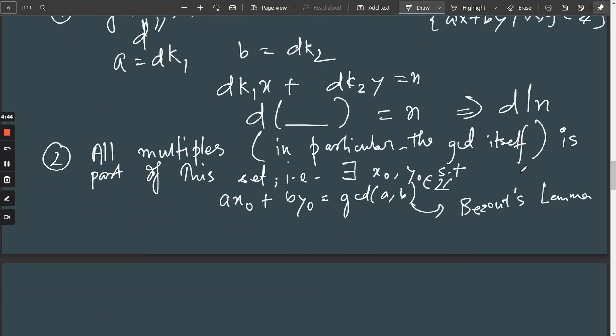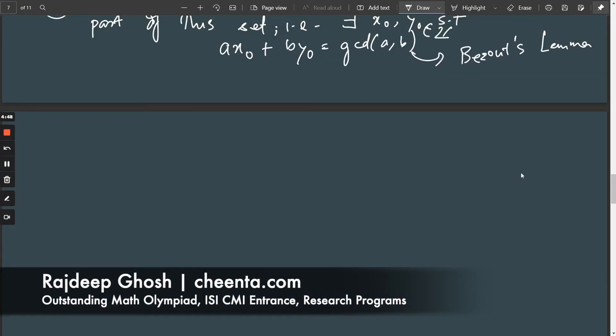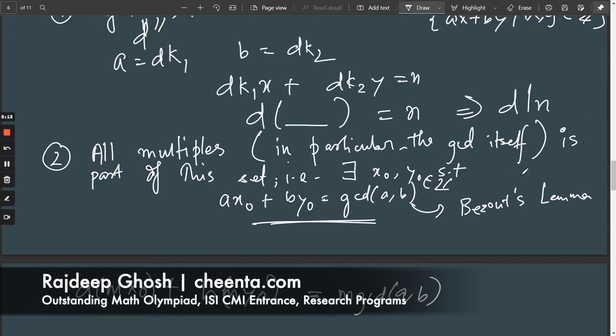Now note that this immediately gives us a deeper relation, which is that if I take these x0 and y0, and I look at a·m·x0 + b·m·y0, what I get is m times gcd(a,b), and I can pick m to be anything. So this actually shows that if this was true, if I could indeed find such x0 and y0, every single multiple of the gcd would be part of this set, which is exactly what we set out to achieve.